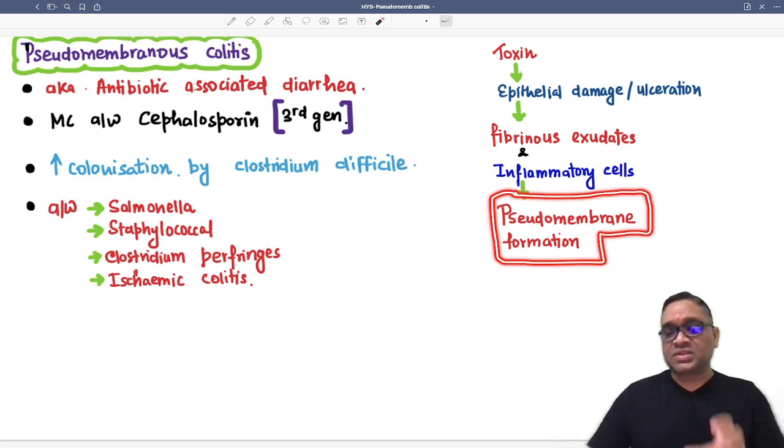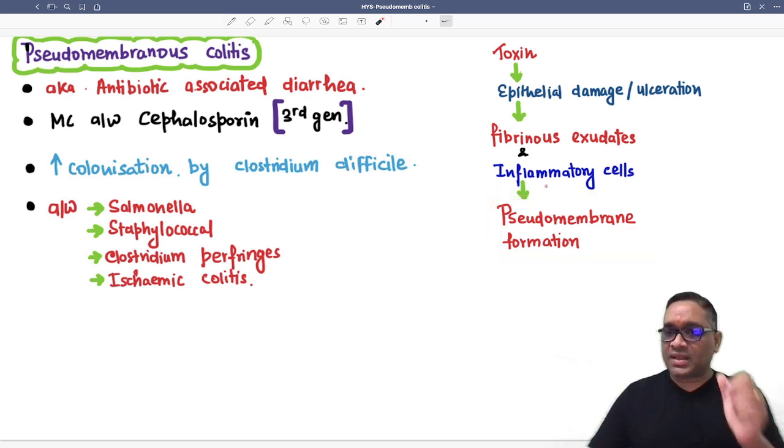Because this is not the membrane. This is the mixture of the inflammatory cells and the fibrin. So that is why it is called as pseudomembrane. It is not true membrane, because the fibrinous exudate is forming the layer.